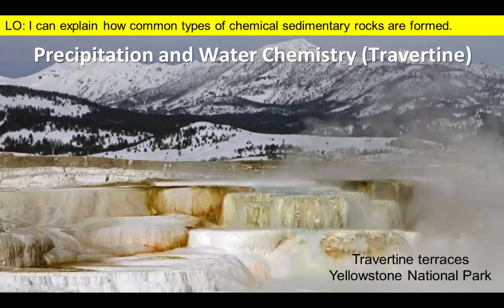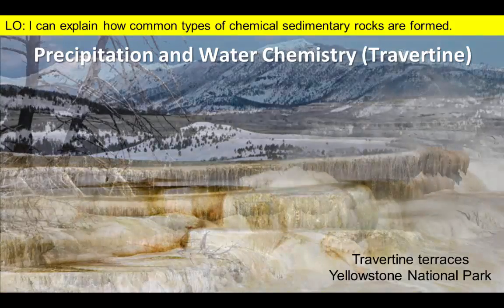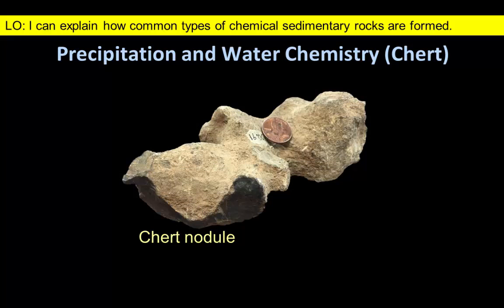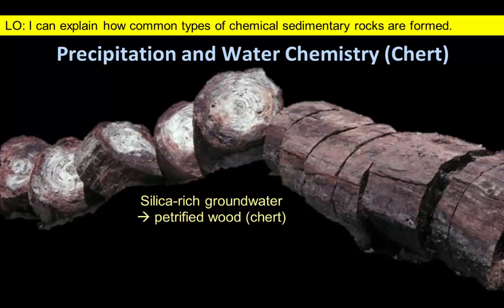Gases are also lost as warm groundwater comes to the surface and minerals precipitate to form travertine, a type of chemical limestone which forms terraces in association with hot springs in Yellowstone National Park. Elsewhere, silica-rich groundwater may replace limestone to form irregular chert nodules, or produce chert when it precipitates in buried trees to form petrified wood.